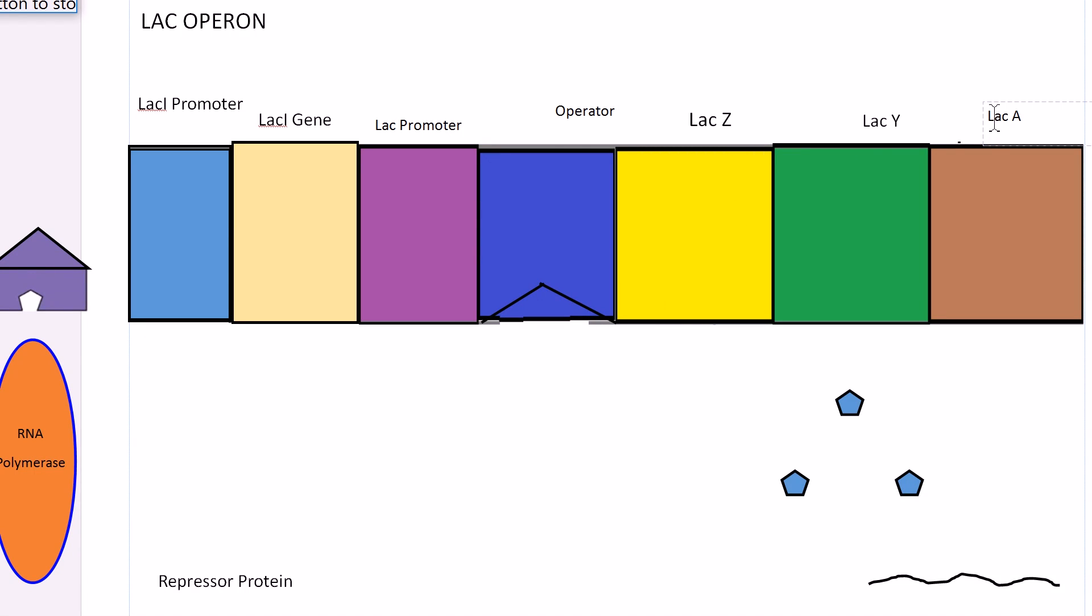Bacteria have a number of different genes used to achieve a task which are placed conveniently next to each other.